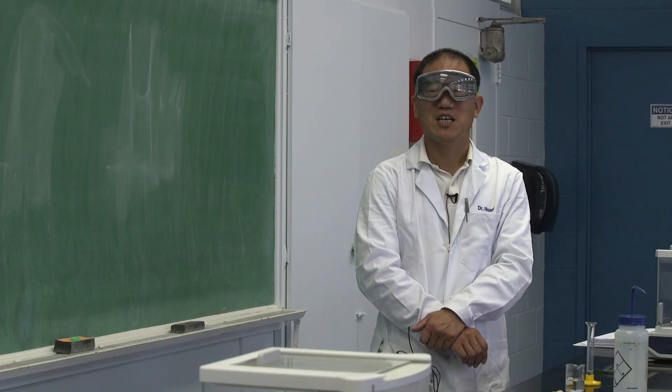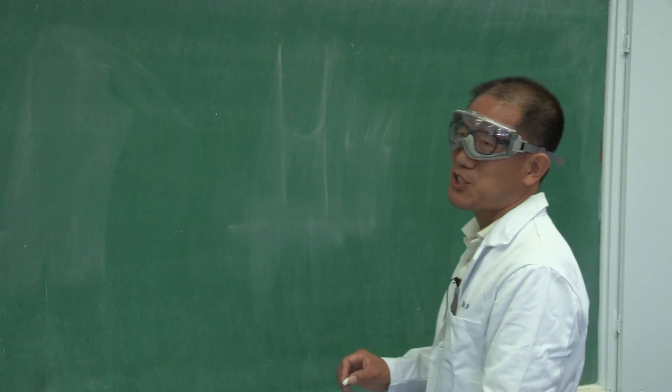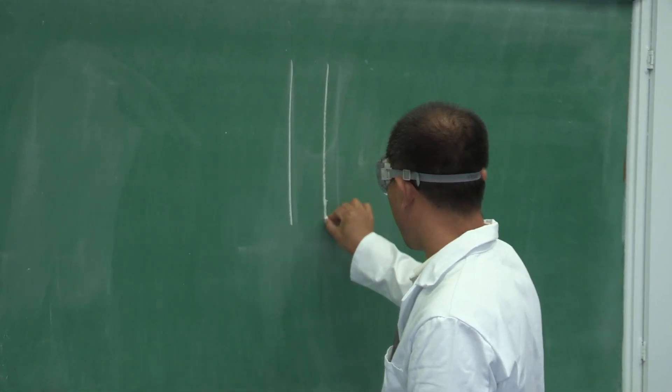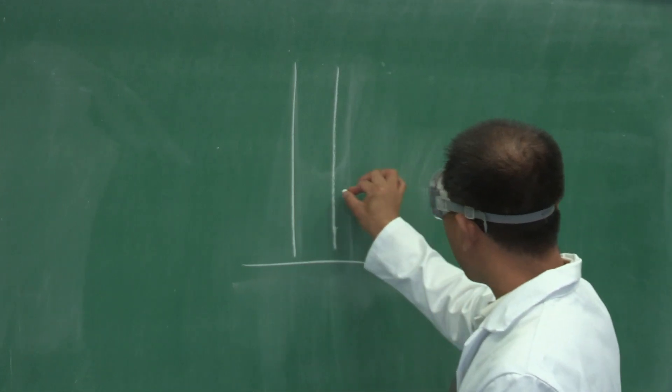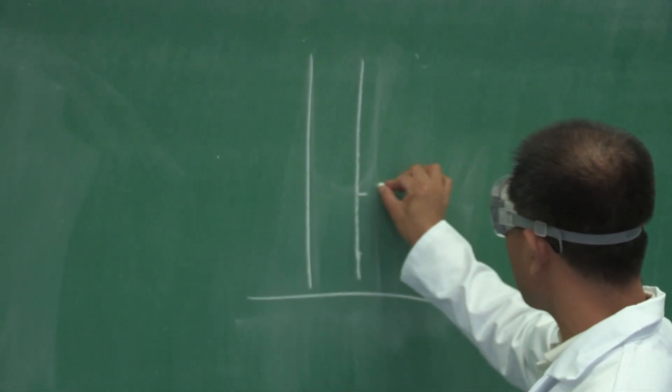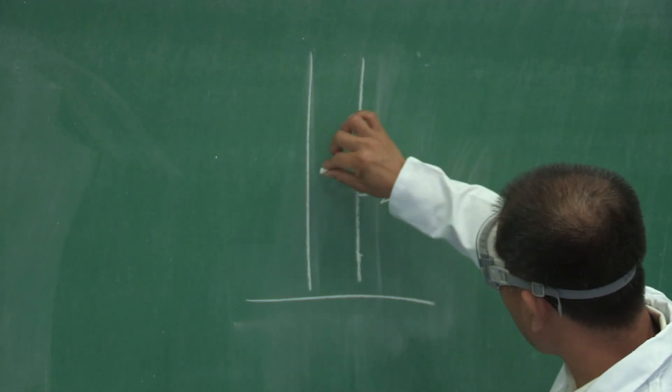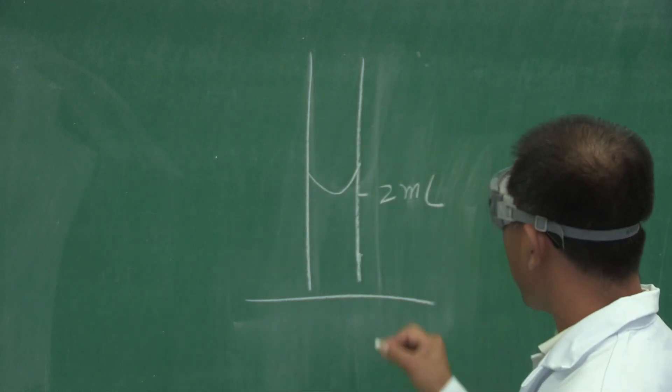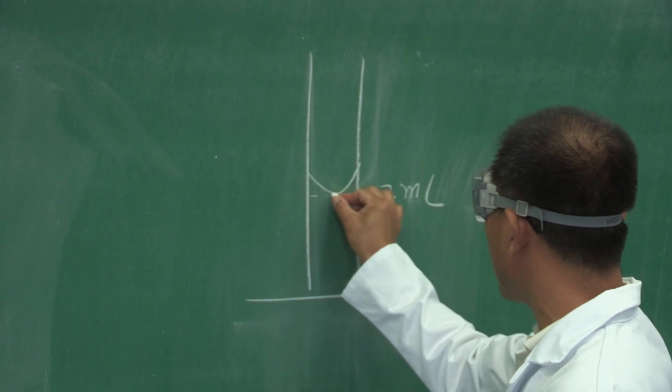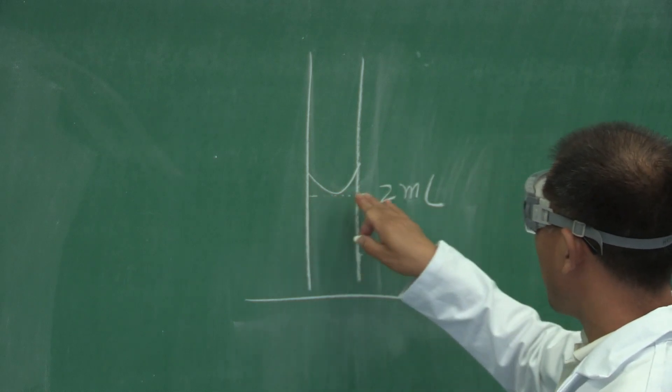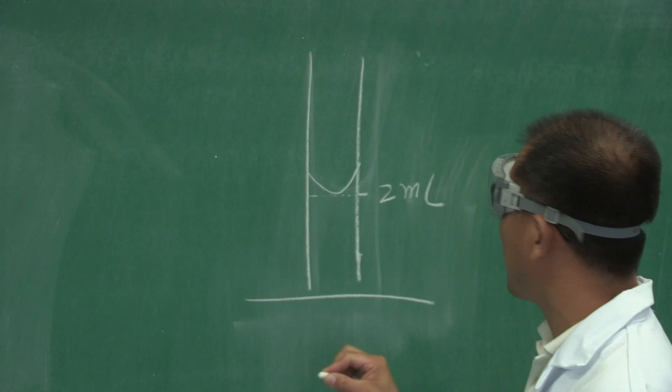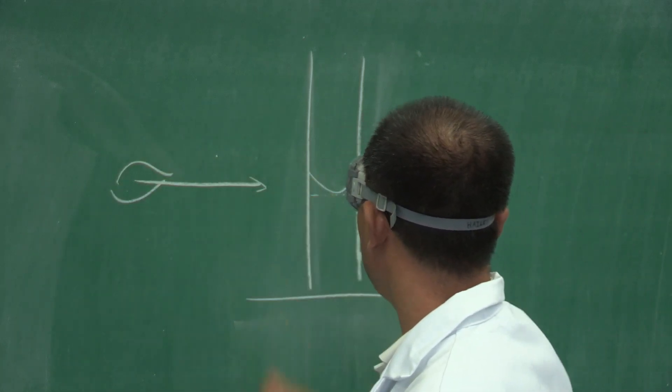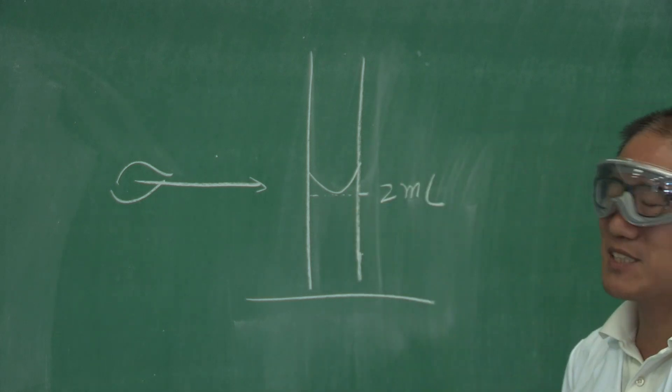When we add water to the 2 milliliter mark, this is what it should look like. This is a graduated cylinder. I hope it looks like that. And then there are some marks here. Suppose this is 2 milliliter mark. And then for water, it should show the shape like this. And then the bottom of the meniscus should be aligned with the 2 milliliter mark. And your eye should be the same level as the meniscus.